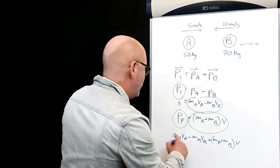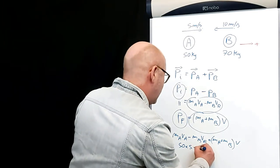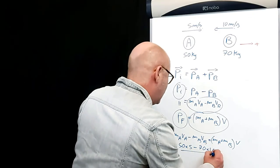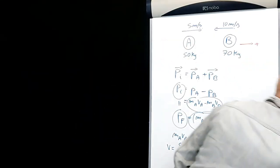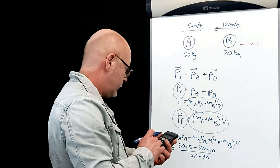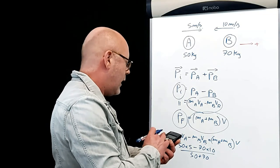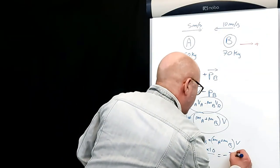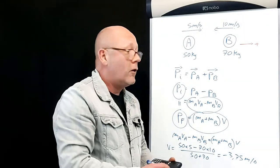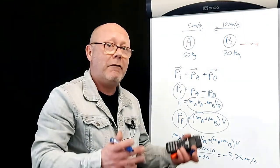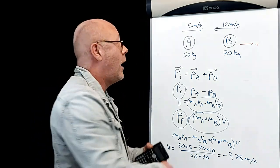So, that was 50 by 5 minus 70 by 10 divided by 50 plus 70. Let me calculate this. I find minus 3.75 meters per second. So, the magnitude of the velocity they have after the crash is 3.75 meters per second. And the direction is that way.